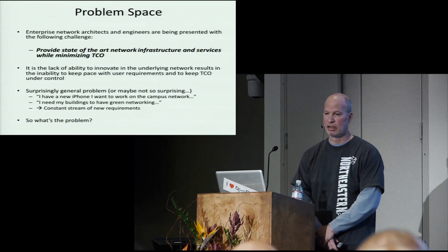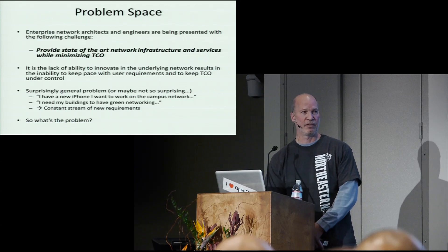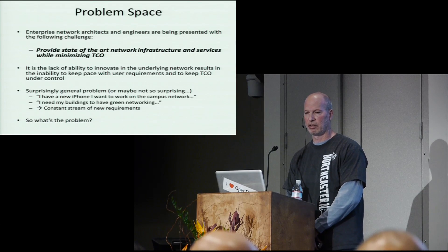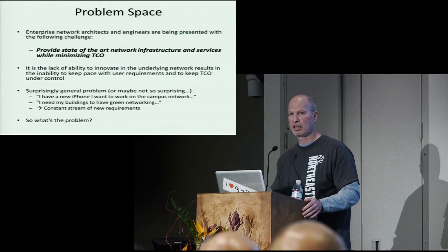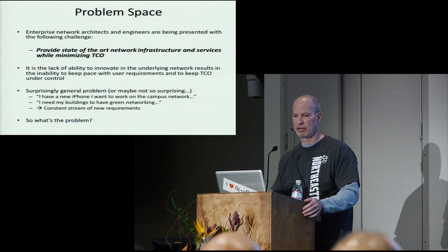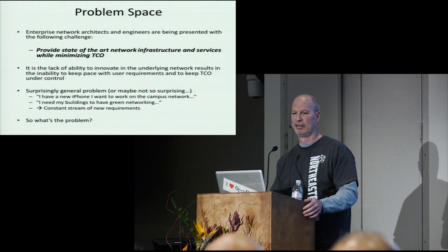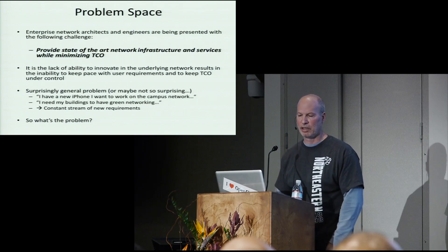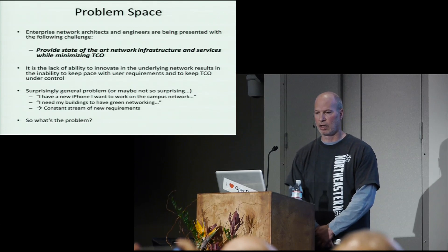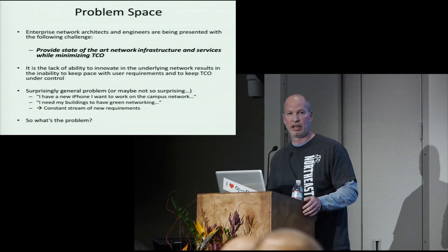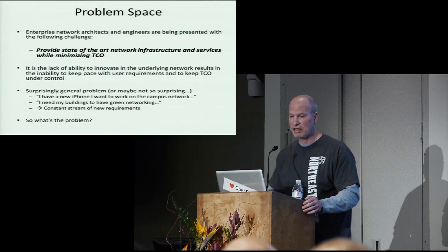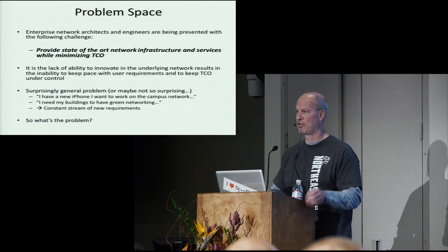So what's the problem here? As far as I can tell, and I've heard this from everyone I talk to, enterprise architects and network engineers are being presented with the challenge that they need to provide state-of-the-art network infrastructure and services while at the same time making it cheaper and minimizing the TCO. The thesis here is that it's the lack of ability to innovate in the network that results in the inability to keep pace with user requirements and to keep TCO under control. And it turns out this is a surprisingly general problem.